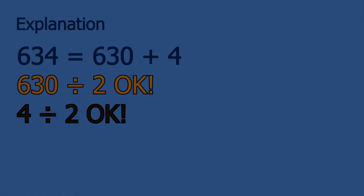What we have left over is the 4. From our experience, we know that 4 can be divided by 2. Now, since both parts — the 630 and the 4 — can be divided by 2, then the original number, 634, can be divided by 2 as well. And the amazing part is that this reasoning works with any number. Basically, at the end, we're just focused on the last digit. If the last digit is an even number, that entire number can be divided by 2.